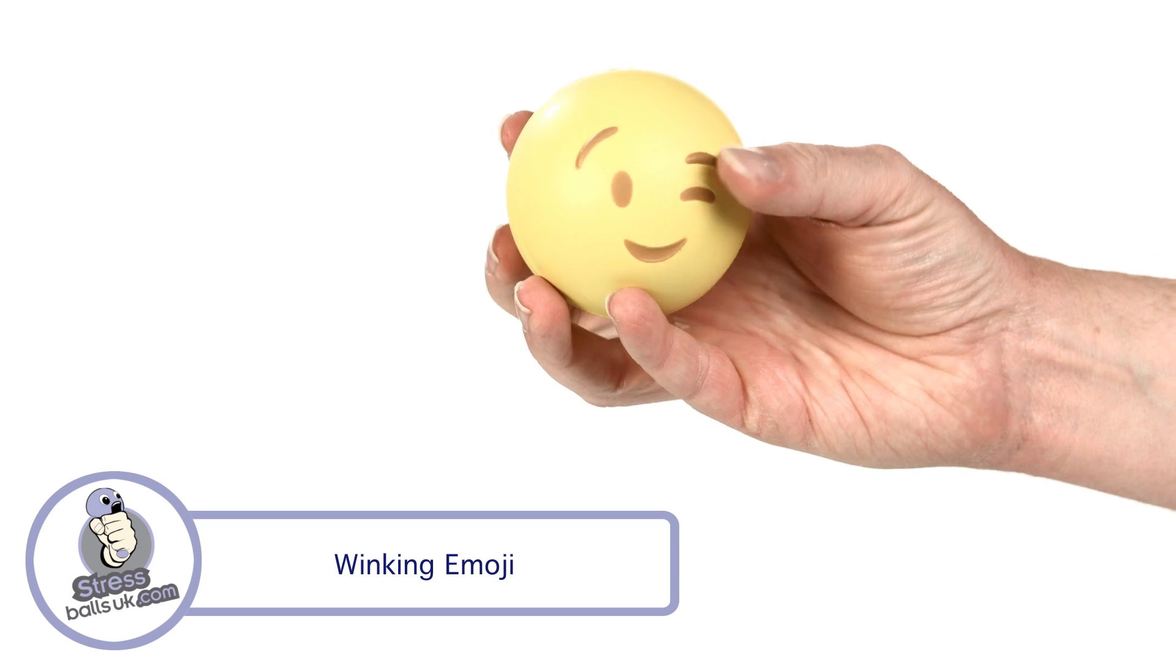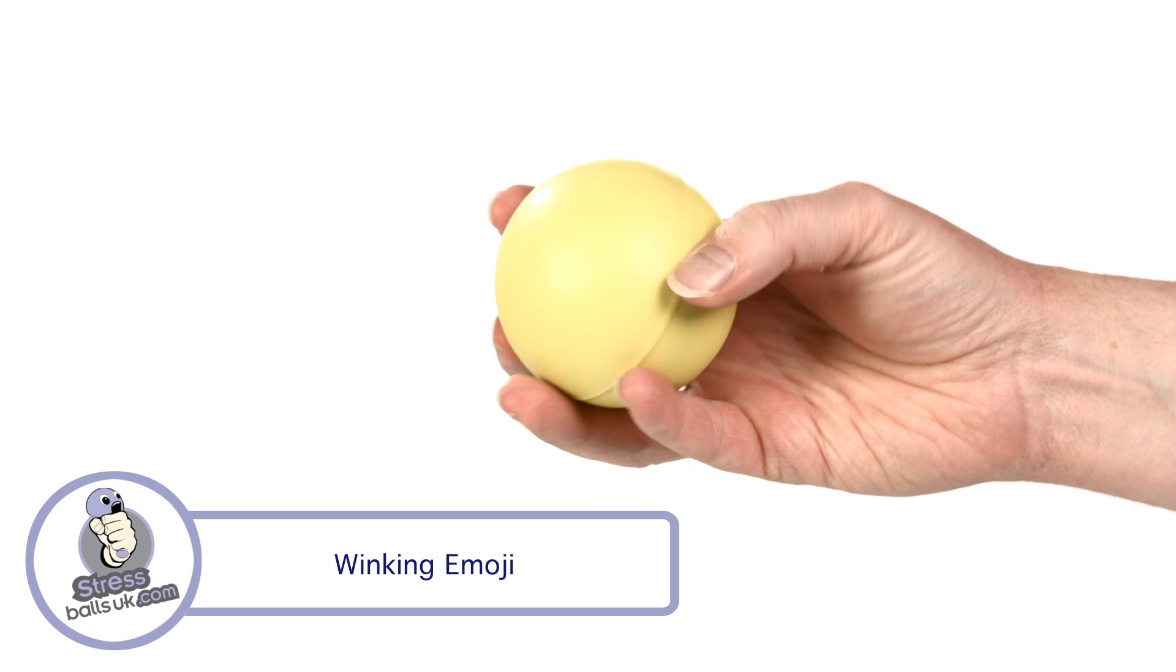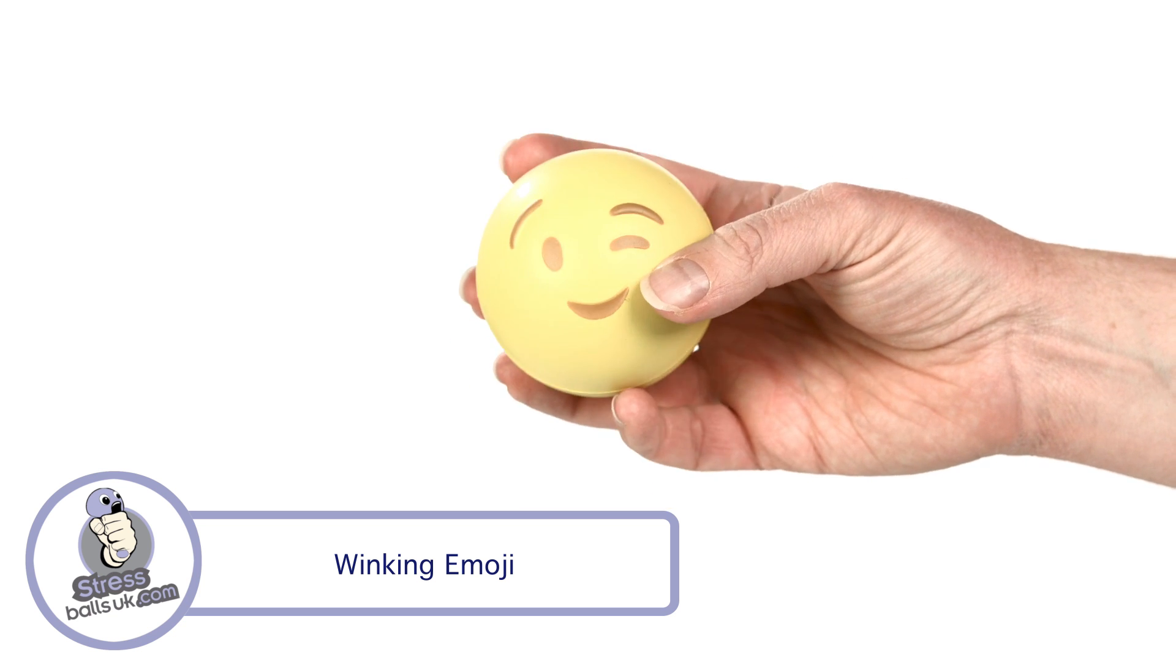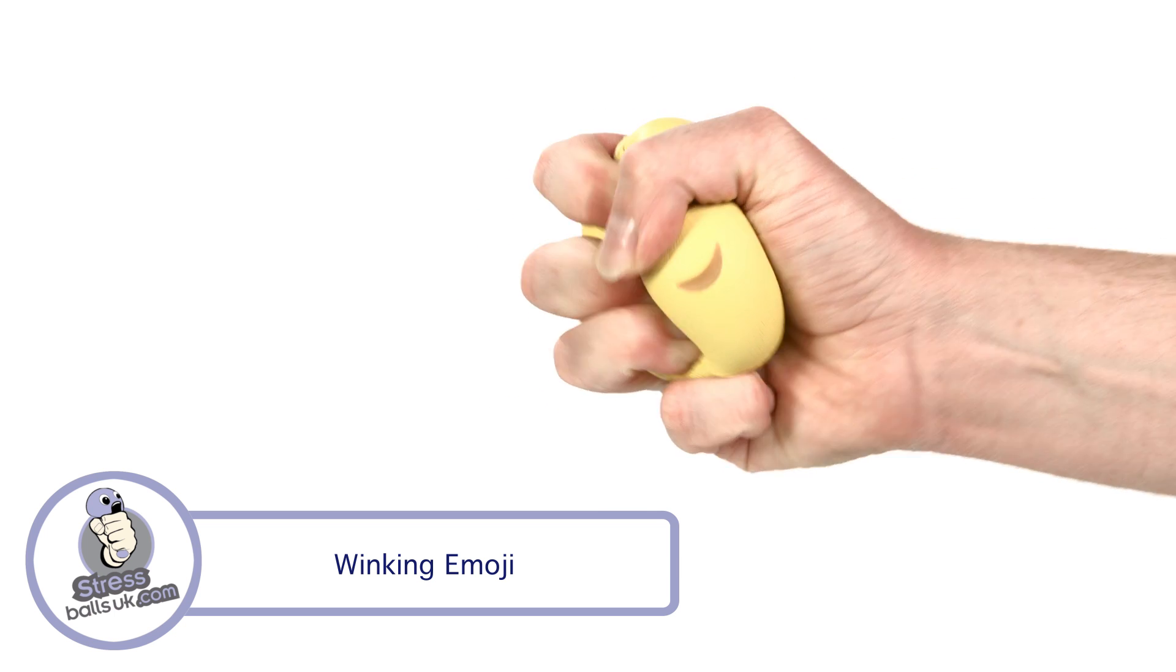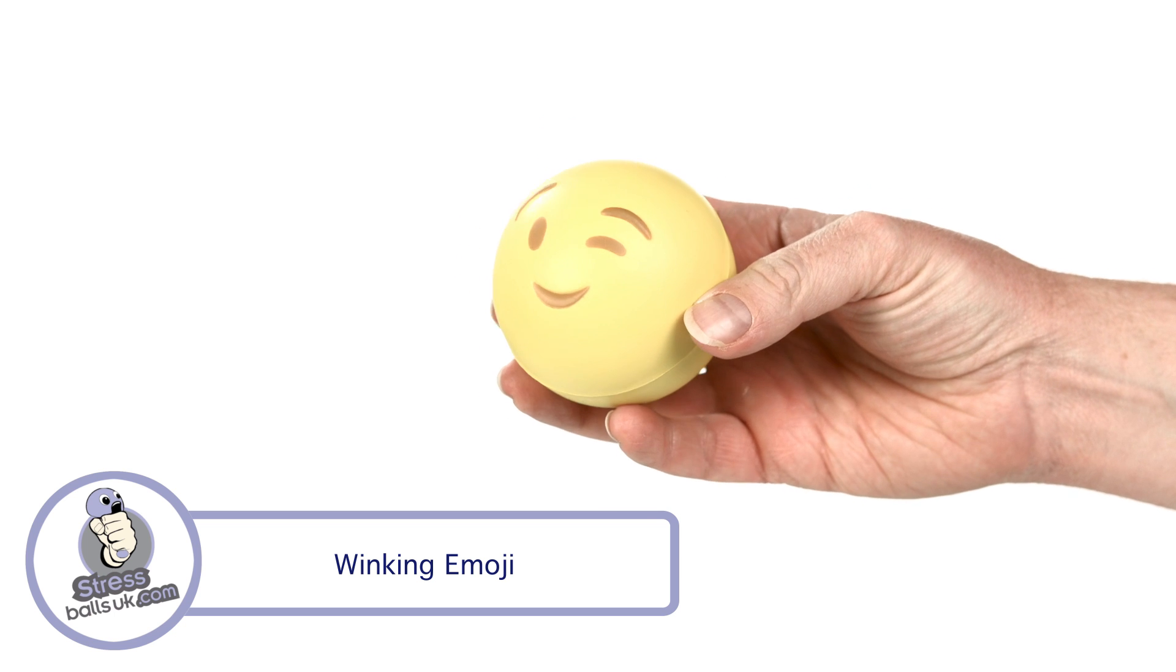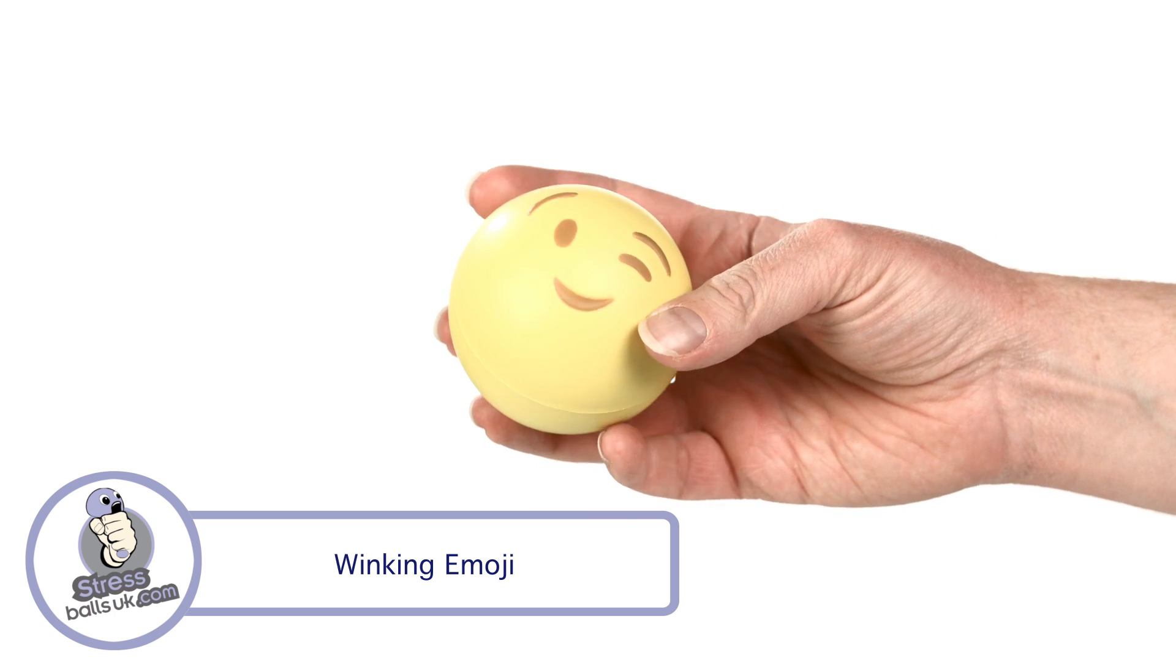The Winking Emoji Stress Ball is made from high-quality foam, has one area for printing, and is usually pad printed but can also be transfer printed if requested. The minimum order is 100 pieces and is usually available from stock in one week for unprinted versions or in two to three weeks with your choice of printed design.